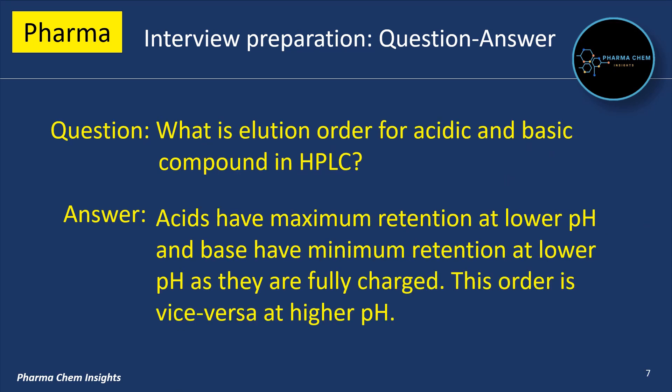Next Question: What is the elution order for acidic and basic compounds in HPLC? Acids have maximum retention at lower pH and bases have minimum retention at lower pH as they are fully charged. This order is vice versa at higher pH.